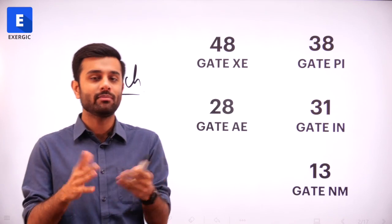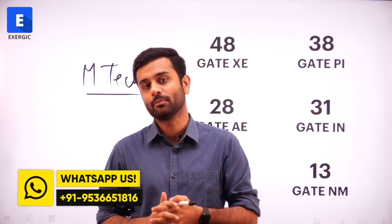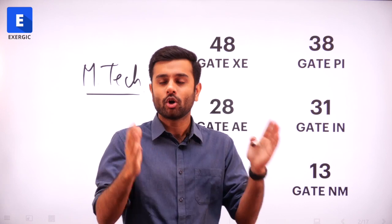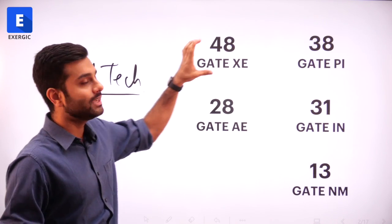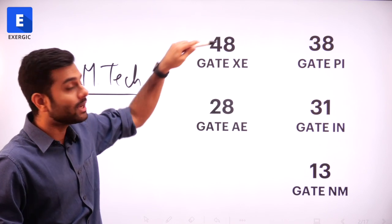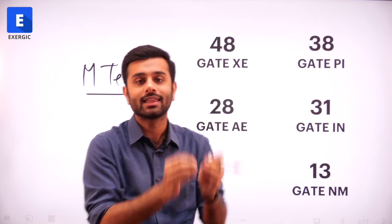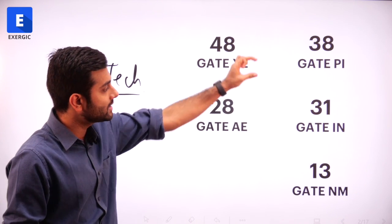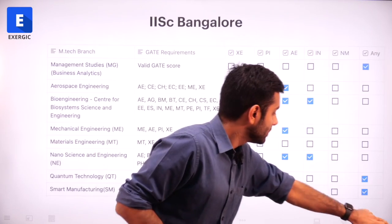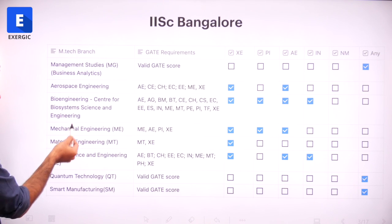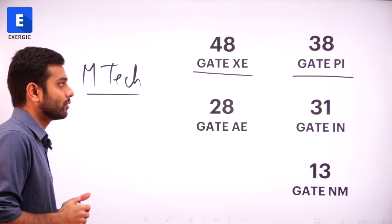I have only taken top few IITs and IISC. Gate ME should obviously be your first choice, not only from the higher studies point of view but also from the jobs or PSU jobs point of view. I am assuming gate ME is your primary paper and you know everything about it. Among the second paper choices, you can clearly see that XE and PI are the top two in terms of total number of different disciplines or specializations in top IITs and IISC that you can apply for.